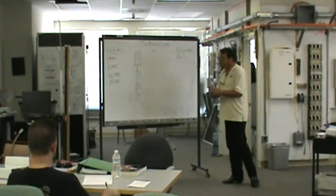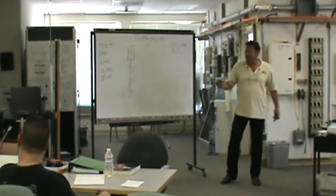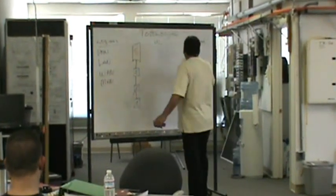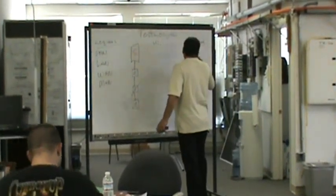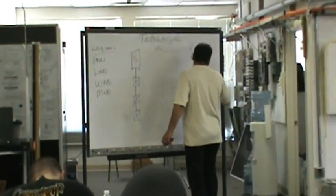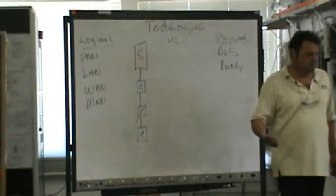The obvious problem with this configuration is one disconnection — that's it. If this one goes out of service, that one's dead. So the next thing they developed in order to overcome this was the ring, otherwise known as the token ring.